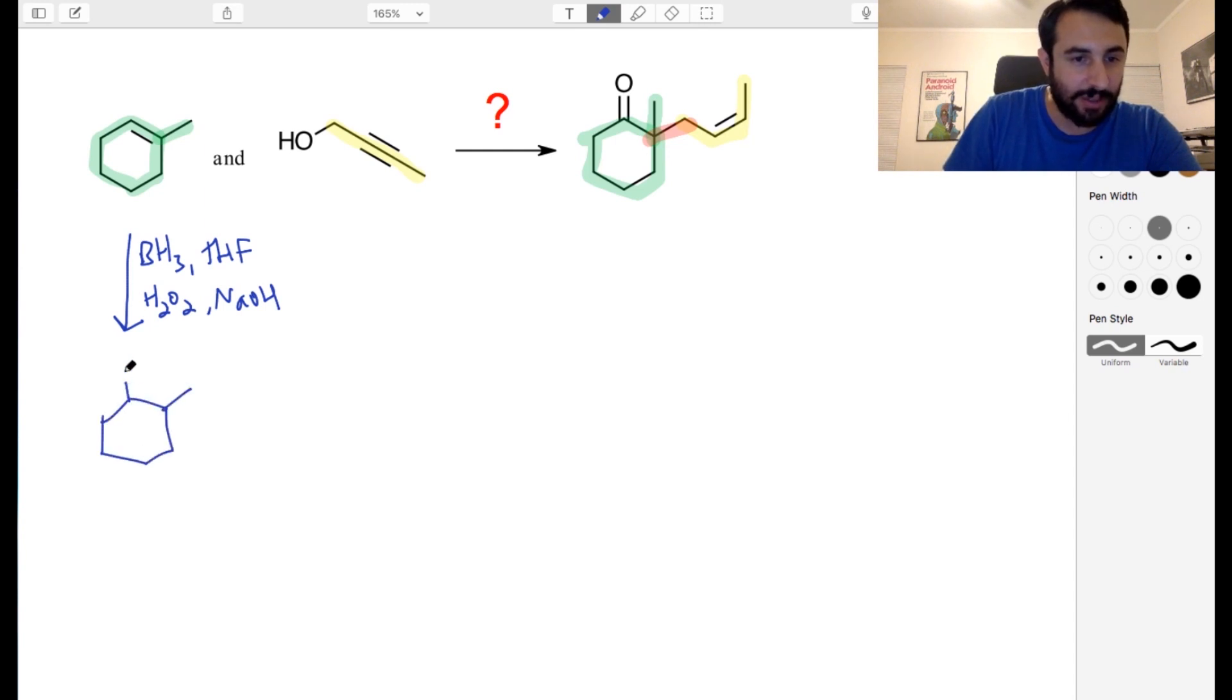That gives us this. We get the hydroxyl on the less substituted carbon. And that's good because now it's very trivial to get the carbonyl. We can just oxidize. PCC probably is going to be just fine because we're just going from the secondary alcohol to the ketone.